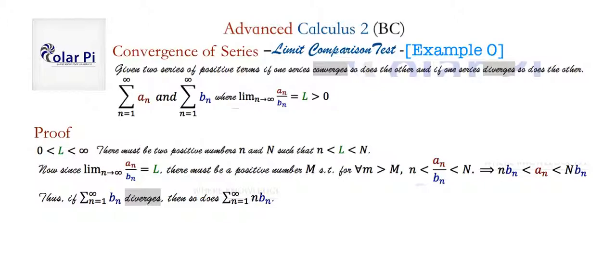And that's what the direct comparison test said. And so, let's write that. Okay, and why does b sub n diverge? Because we already said, if b sub n is divergent, this is divergent. And if this is divergent, then b sub n is divergent.